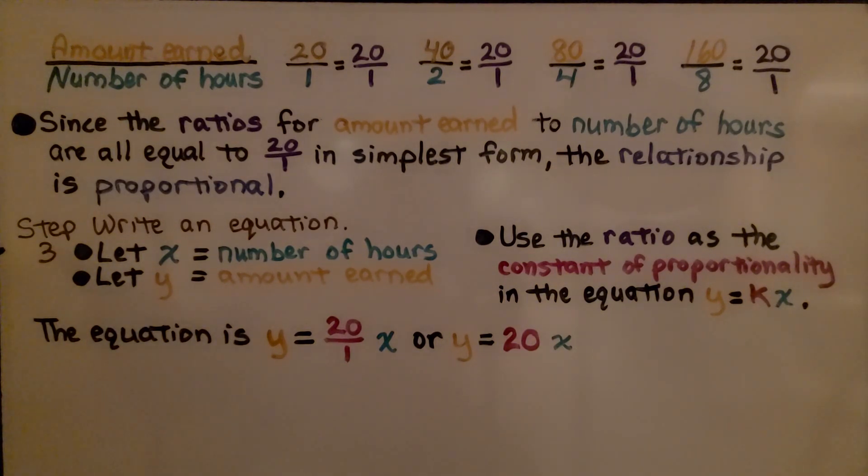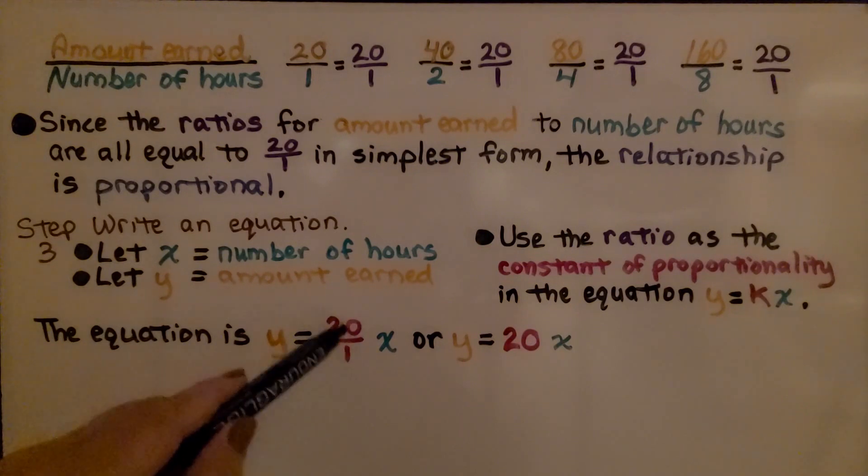Step 3, we write an equation. We're going to let x equal the number of hours and we're going to let y equal the amount earned. We use the ratio 20 over 1 as the constant of proportionality in the equation y equals kx. So our equation is y equals 20 over 1x or we can say, because that's equal to 20, y equals 20x. That's our equation.